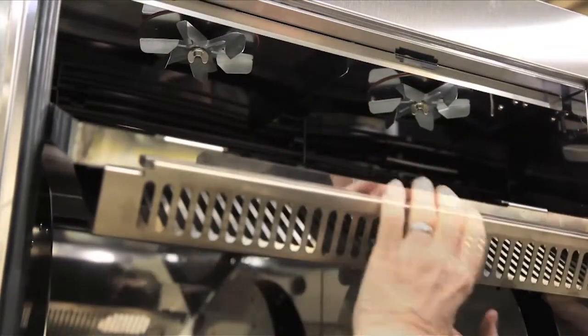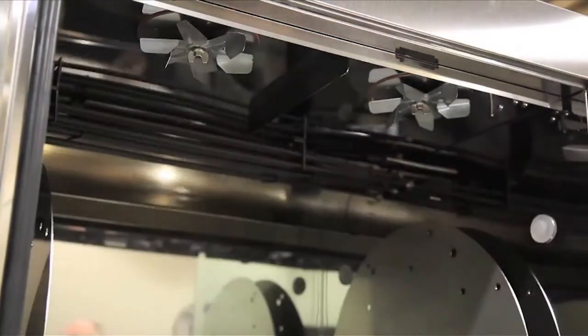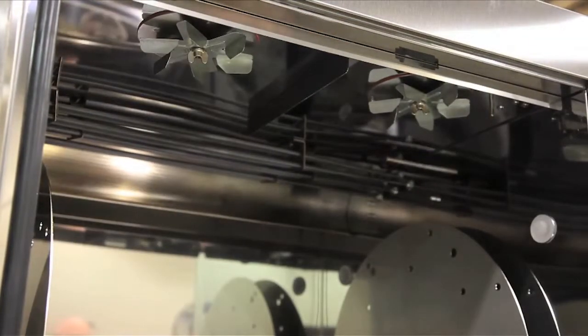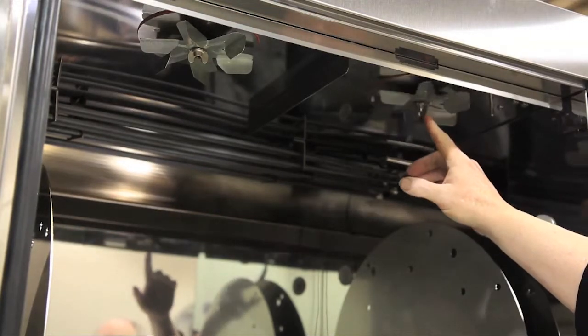Removing the fan cover and dropping down. This needs to be done every night. Now you've broken down the interior of the oven completely.